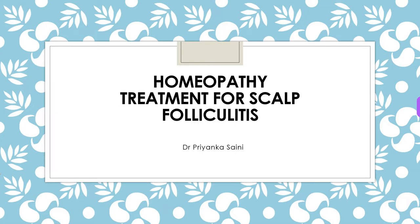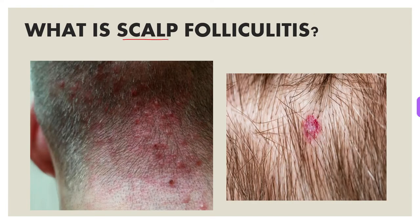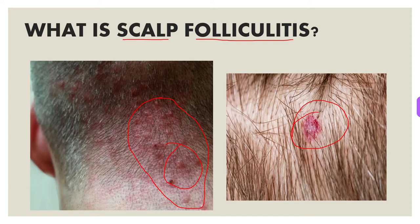Folliculitis is a common inflammatory skin condition that affects your hair follicles. It is usually caused by fungus or bacterial infection. The infection occurs when you damage your hair follicles, which are the openings in your skin that hold the root of your hairs. This can affect any part of your body with hair, including your scalp. This condition is not contagious, and you can usually treat it using homeopathic medicines.